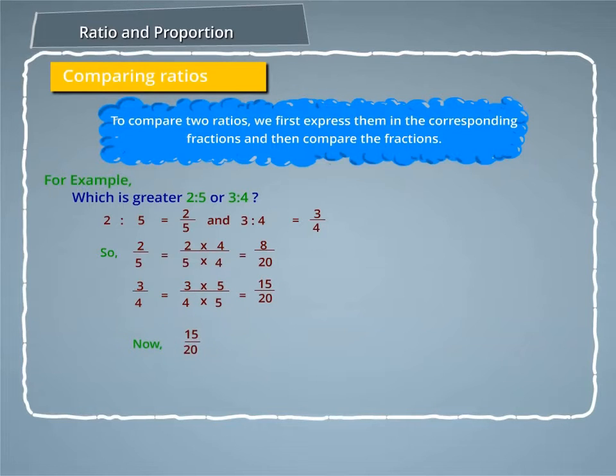Now, 15 by 20 is greater than 8 by 20 or 3 by 4 is greater than 2 by 5. Hence, we find that 3 is to 4 is greater than 2 is to 5.